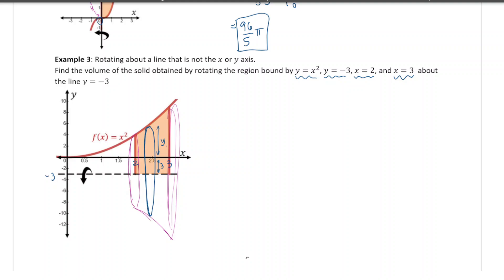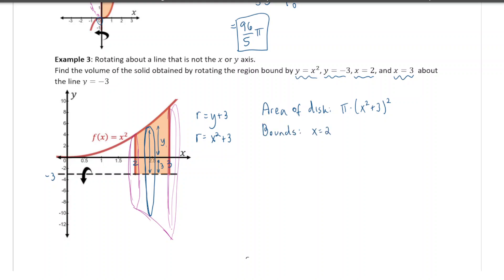The radius is y + 3. For this graph, the y-coordinate along the curve is x². So the radius is x² + 3, and the area of one disk is π times (x² + 3)². The bounds of the integral go from x = 2 to x = 3. The volume is the integral from 2 to 3 of π times (x² + 3)² dx. The extra three comes because we're rotating around a line below the x-axis, which extends the radius longer than if we'd rotated around the x-axis.